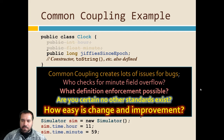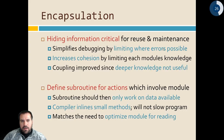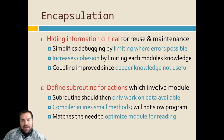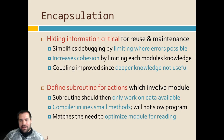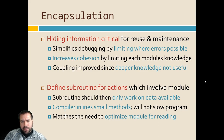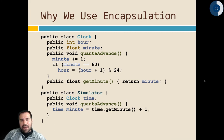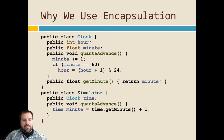Encapsulation: we hide all the details, only expose a public interface, and have other code access functionality only through that public interface. This is how we get some looser coupling — by not letting and not even forcing other modules to access our internal details. Instead of just having `hour` and `minute` in the clock, we put the `quantaAdvanced` method right in the clock class instead of having the simulator control that.